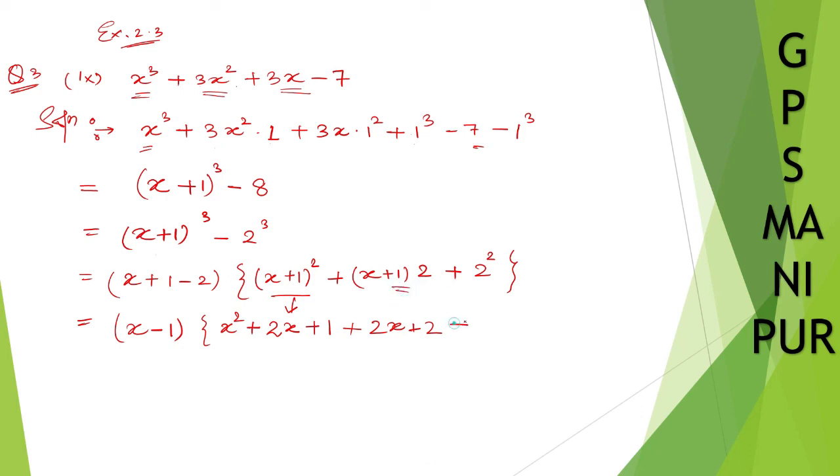Now let us take this one. So 2 squared, it is 4. Okay, now x minus 1, x squared, write down x squared, 2x plus 2x, it will be 2x plus 2x, it will be plus 4x.